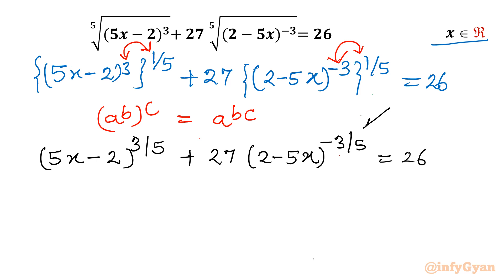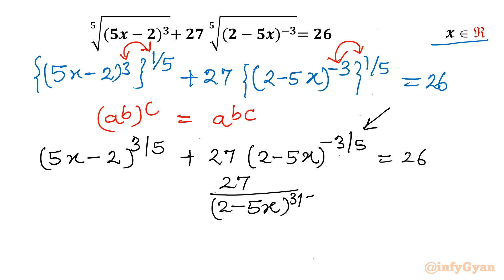Now this exponent is negative, so I can take it into the denominator. I can write 27 over (2 minus 5x)^(3/5), equal to 26, alongside the first term.